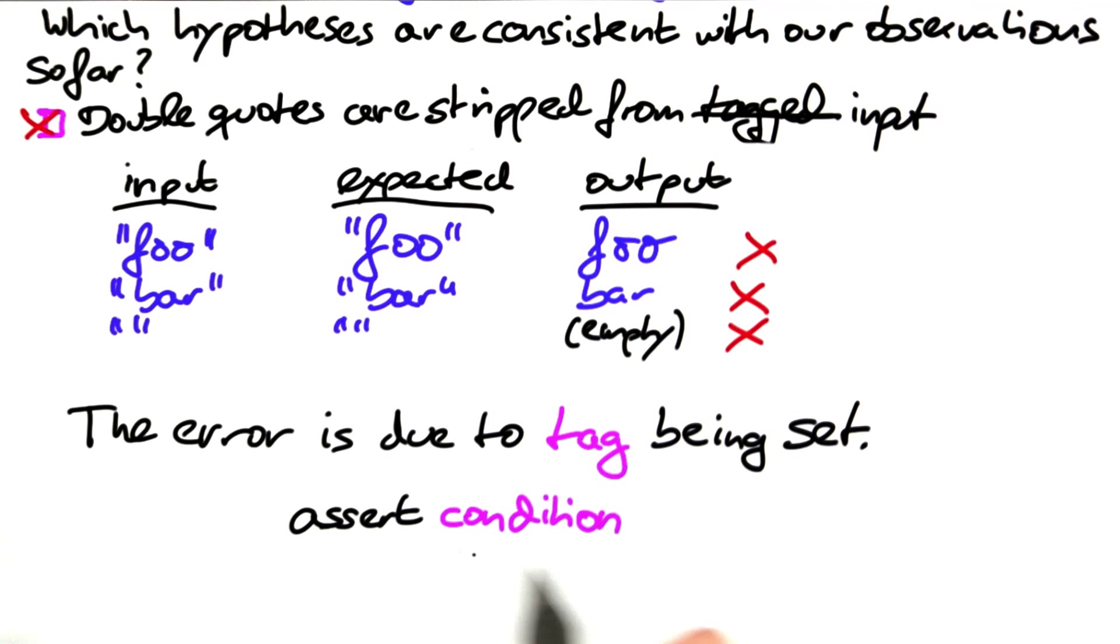The statement assert, followed by a condition, evaluates the condition and aborts the execution, raising an exception if the condition is false.